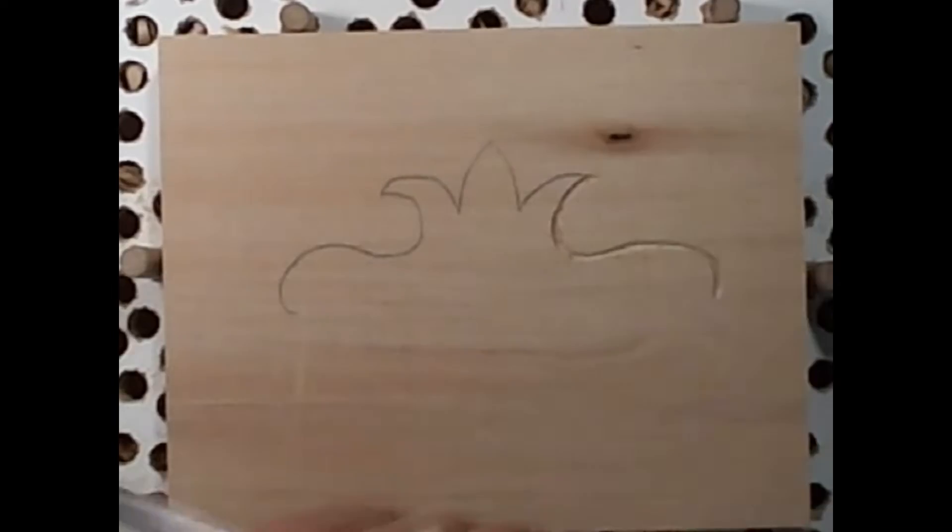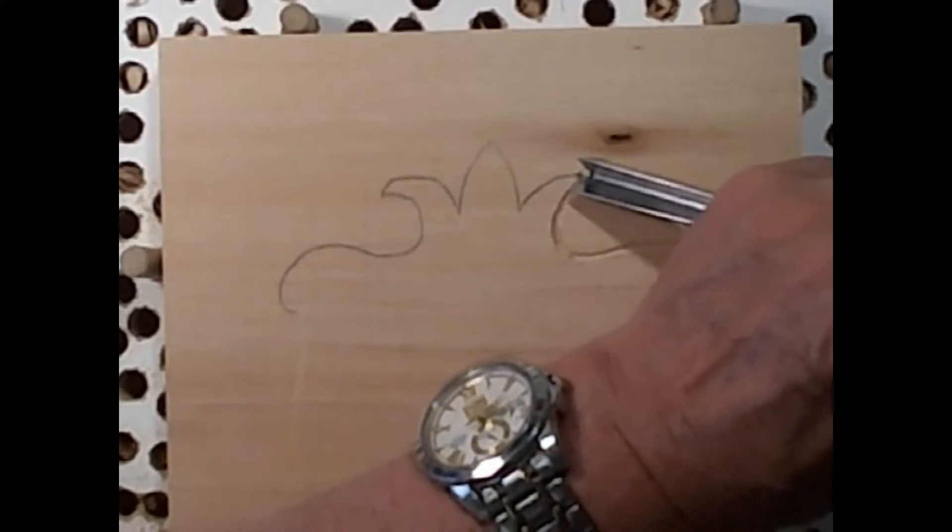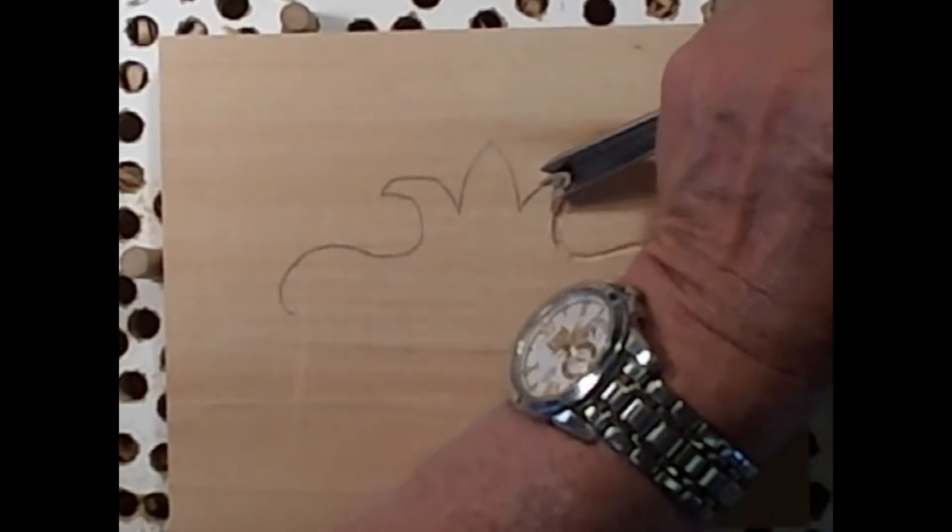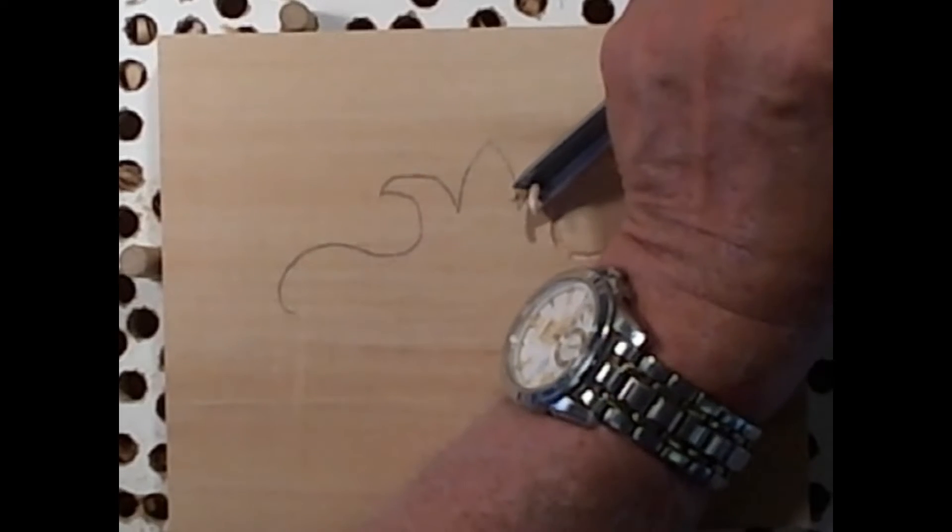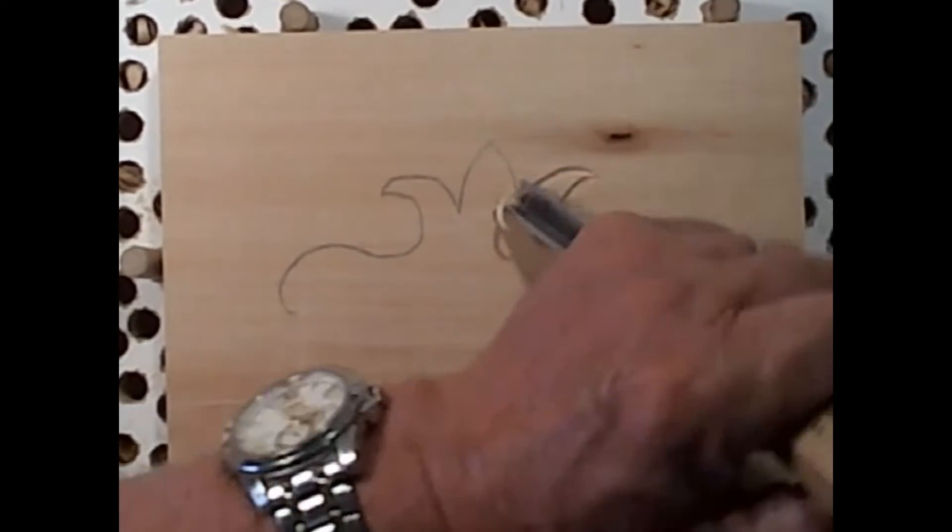And that's all there is to a chase carving. Just using the v-tool. So it's very quick. You just come around like this. Now you can spin it.